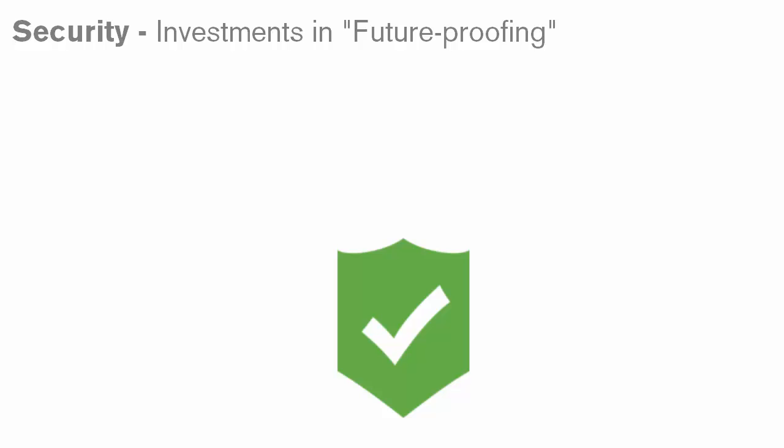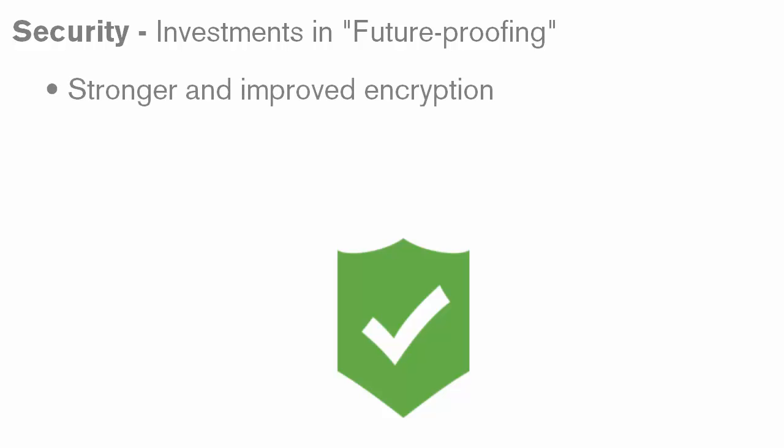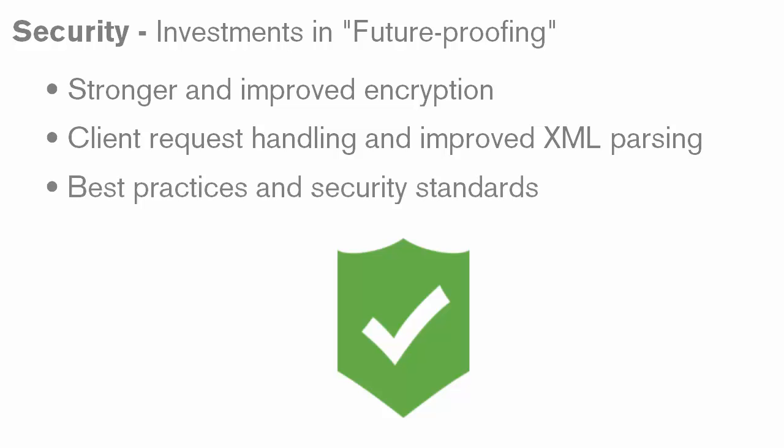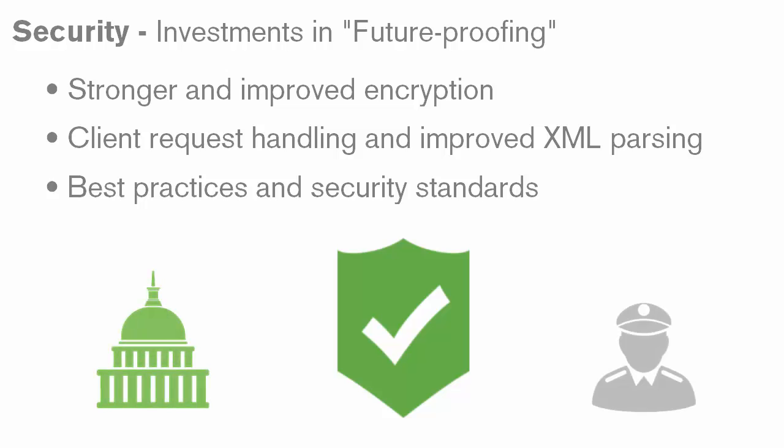In QlikView 12, we have made over 100 investments and improvements in security across the entire product, aimed at future-proofing. A few examples include stronger encryption and improved encryption handling, more robust centralized client request handling and XML parsing, and better ability to keep pace with evolving security best practices and cryptographic standards. These investments improve our ability to meet the highest level of security requirements for the most demanding companies, including government and military organizations.